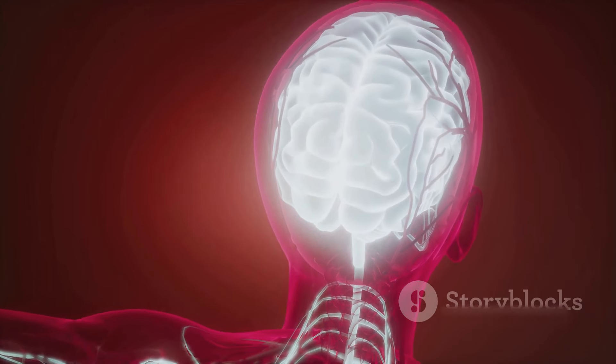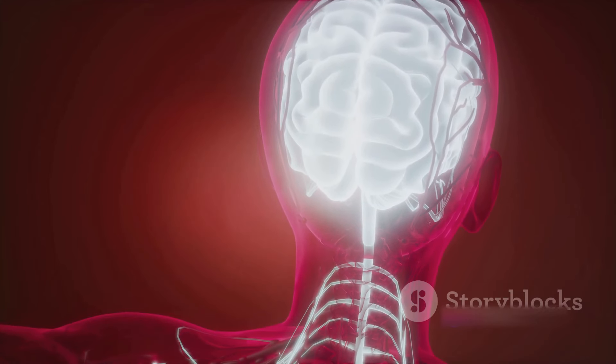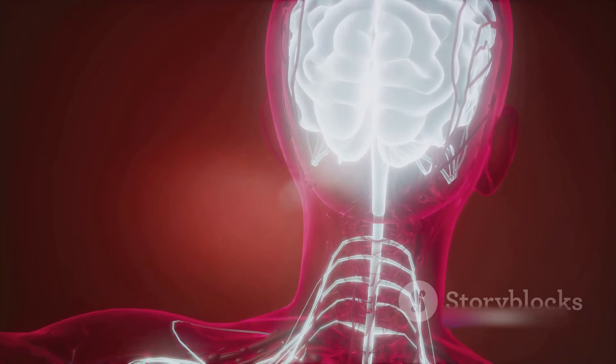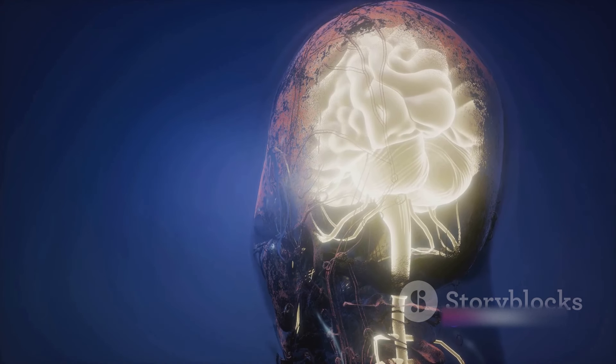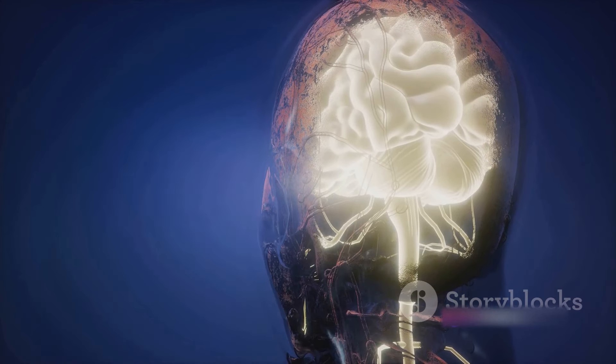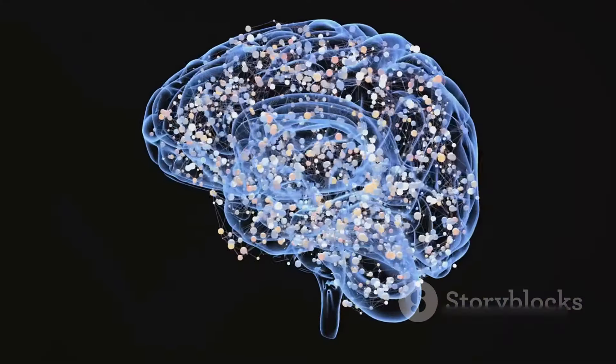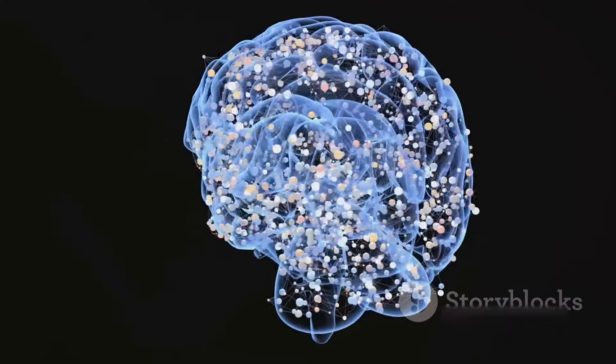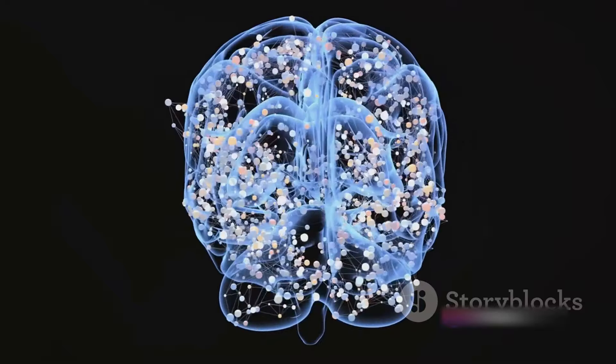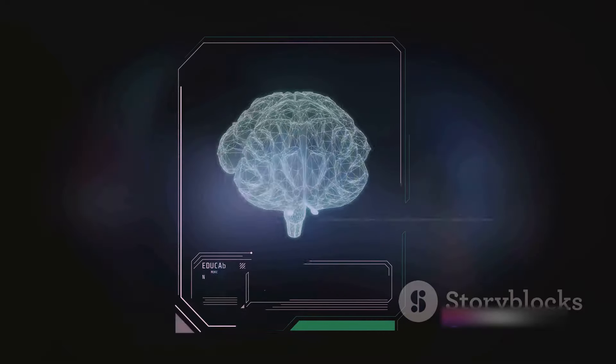Our brain is a complex network of roughly 86 billion neurons, all intricately interwoven. Each region of the brain has a specific function, whether it's controlling our heart rate, enabling us to appreciate a symphony or solving a complex math problem. Every second of every day, these regions are abuzz with activity, even when we're asleep.